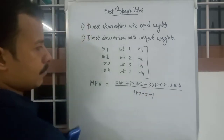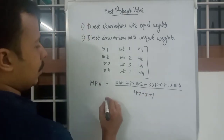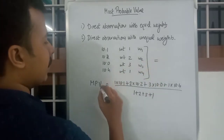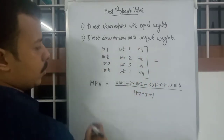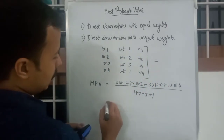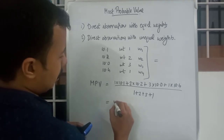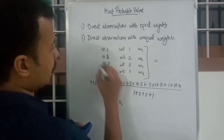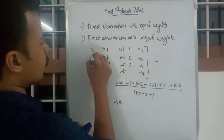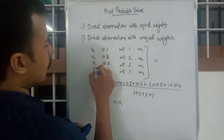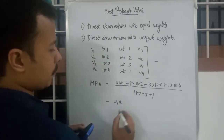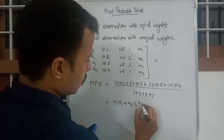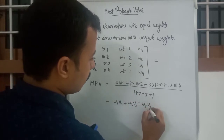So the answer you get is the MPV for this scenario. The equation is: W1·V1 + W2·V2 + W3·V3 + W4·V4, and so on, divided by W1 + W2 + W3 + W4. That is the formula for direct observations with unequal weights.